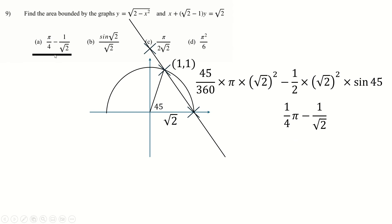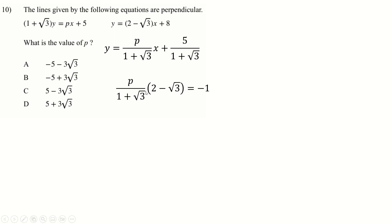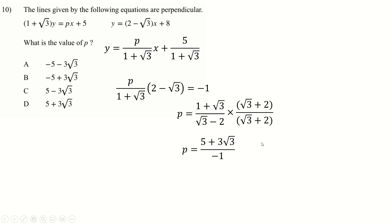You could also have identified answer A straight away since these area questions always involve pi minus something. Question 10: rearrange to y = mx + c form. For perpendicularity, the product of gradients equals −1. Multiplying both gradient expressions together, rearranging, rationalising by multiplying by (1 + √3) and (2 − √3), things cancel quickly and you end up with answer A — a nice clean question.